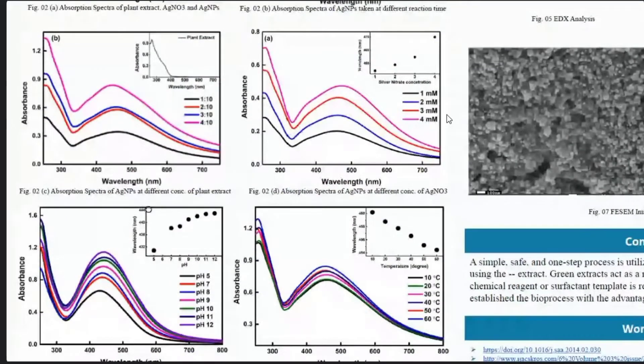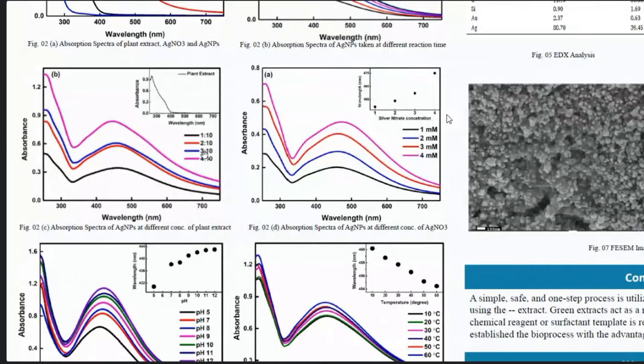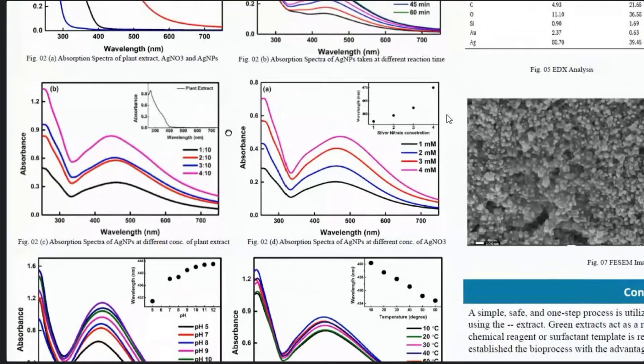Next we have taken the absorption spectra at different concentrations of plant extracts. The concentration is represented in terms of ratios. As we increase the ratio of plant extract used to the precursor, we can see that the intensity increases. This is happening because as we increase the plant extract, the amount of flavonoids, terpenoids and phenolic acids that are present in it are also increasing, so the precursor is being reduced and capped better.